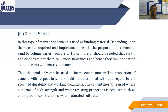In cement mortar, cement is used as a binding material. Depending on strength requirements and importance of work, the proportion of cement to sand may vary from 1:2 to 1:6 — for structural parts, 1:2 is used, while for plastering, 1:6 can be used. Surkhi and cinder are not chemically inert and cannot be used as adulterants with cement; only sand can be used. Cement mortar can be used for water-resisting structures and high-strength applications.